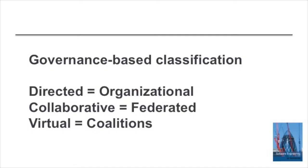Fundamentally I agree with Meyer's classification of systems of systems, but I don't like the terms he used. I don't think they're intuitive and I think they're potentially confusing — the term 'virtual' has come to mean something completely different from what he suggests. So I suggest we use different terms: a directed system of systems should be called an organisational system of systems, a collaborative system of systems should be called a federated system of systems, and a virtual system of systems should be called a coalition of systems.